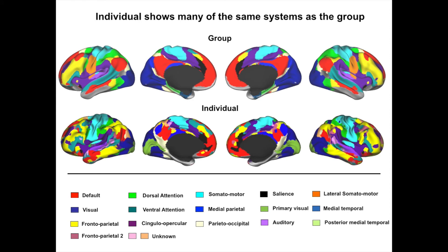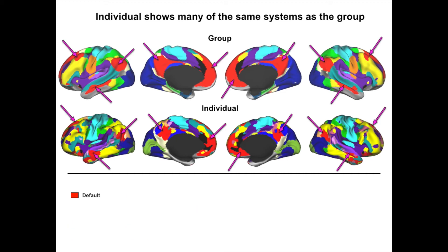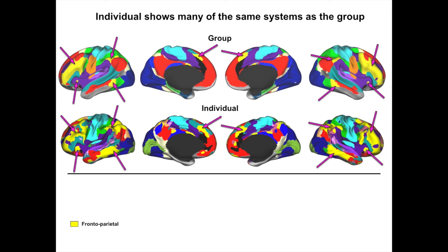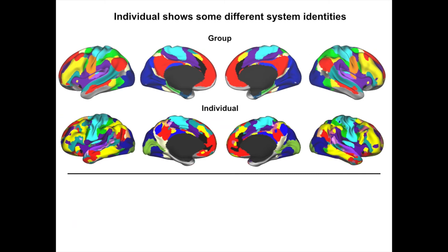Finally, using an infomap-based community detection procedure, we are able to directly compare the system organization of the individual with that obtained from a group average of 120 subjects. Notably, the individual has many of the same systems as are observed in the group. Even detailed features of these systems can be observed in both datasets, as we can see in the default mode and frontal parietal systems. Some important exceptions include the presence of a primary visual system in the individual but not in the group, and the lack of a ventral somatomotor system in the individual that was present in the group.